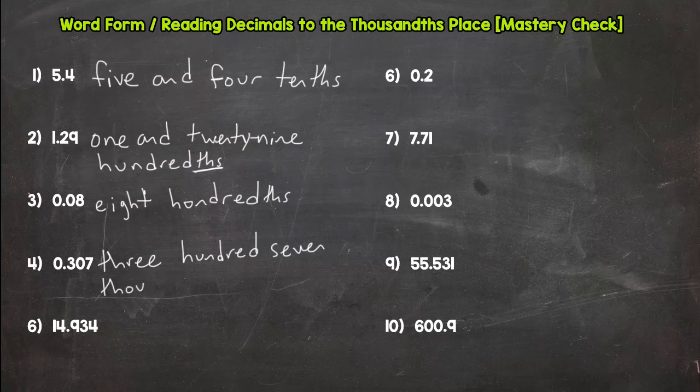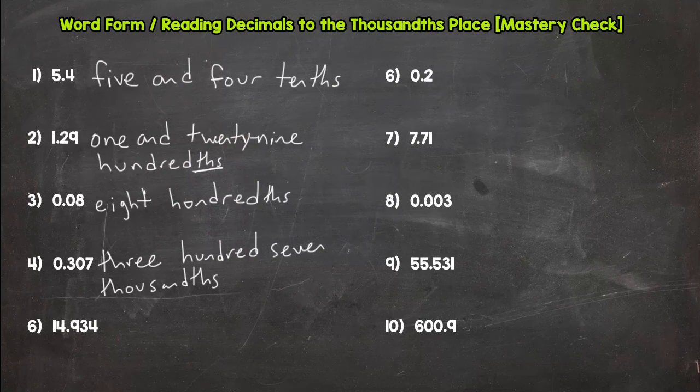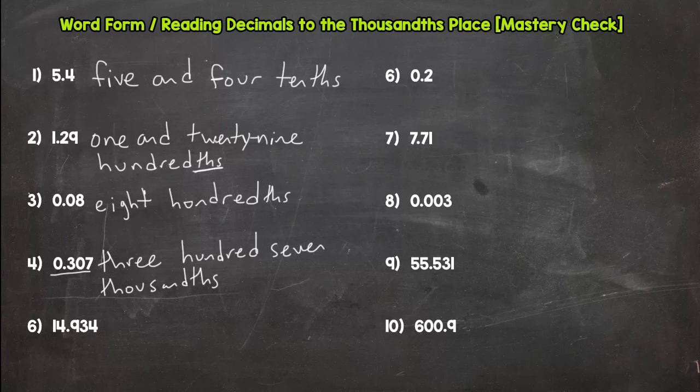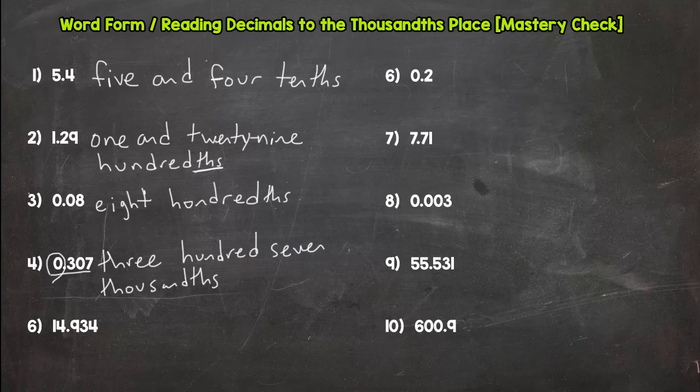Number four: three hundred seven thousandths. Now one of the most common things I see with fifth graders doing word form for decimals, for example number four here, would be saying zero and three hundred seven thousandths. If you put that, you do not need to mark that wrong. You are technically correct.